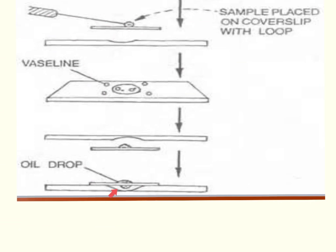This will allow us to observe large microorganisms in their environment while the microorganisms are alive. It will also allow us to determine whether any movement on the slide is due to Brownian motion — which is just random movement or the sloshing of the slide — versus actual motility, meaning the bacteria moving.